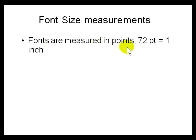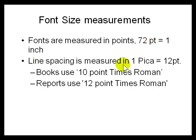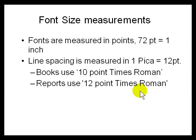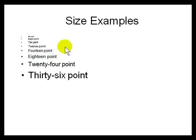Fonts are measured in points — 72 points make an inch. Line spacing is measured in pica, and 1 pica equals 12 points. Books use 10-point Roman; class reports use 12-point Roman. Examples of sizes are 36, 24, 18, 14, 12, and 10 point — though they may look different on a PowerPoint slide.